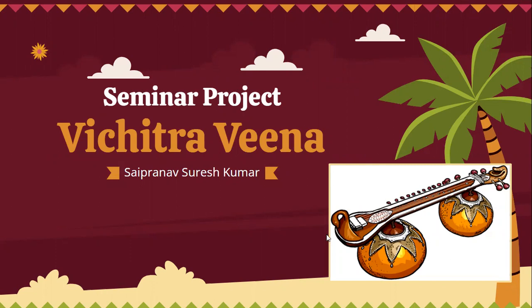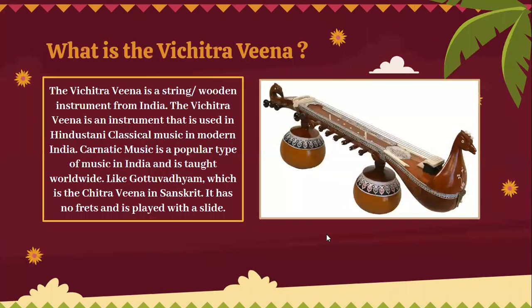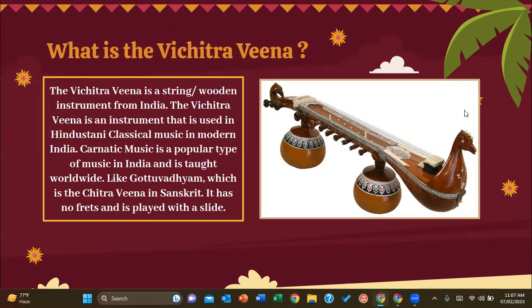What is the Vichitra Veena? The Vichitra Veena is a string and wooden instrument from India. It is an instrument from Hindustani classical music. In modern India, Carnatic music is a popular type of music taught worldwide, like Gotu Vadyam — which is the Chitra Veena in Sanskrit. It has no frets and is played through a slide.